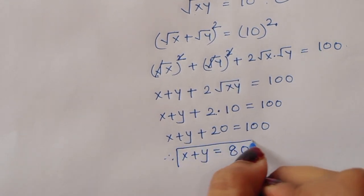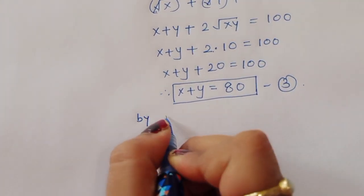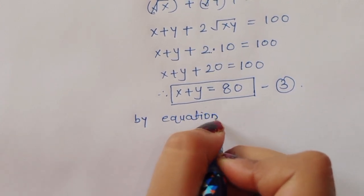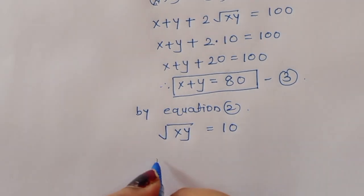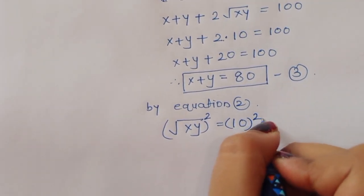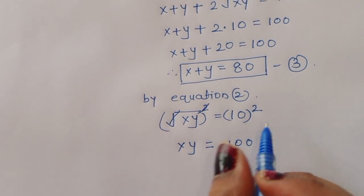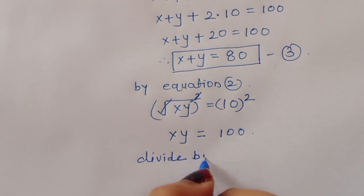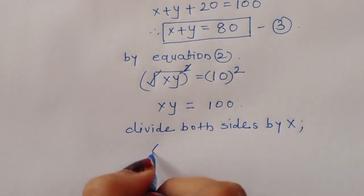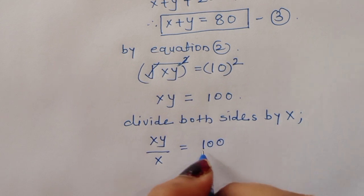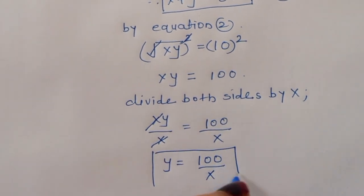By equation 2, √(xy) = 10. Squaring both sides, xy = 100. Now dividing both sides by x, we get y = 100/x. This is the value of y.